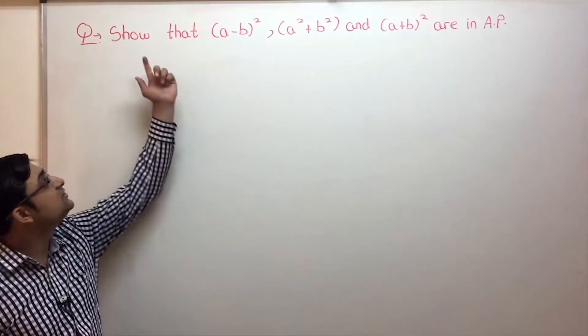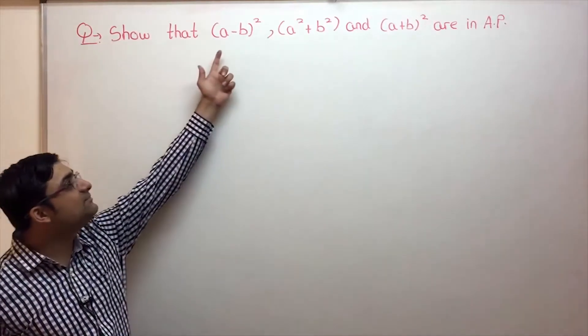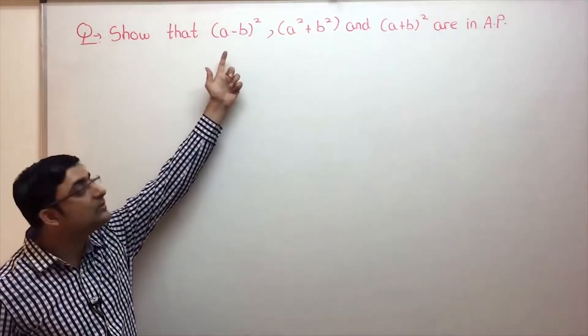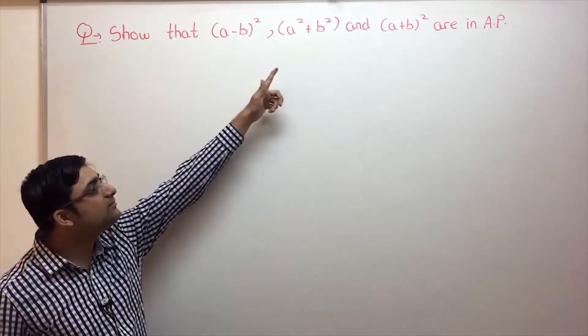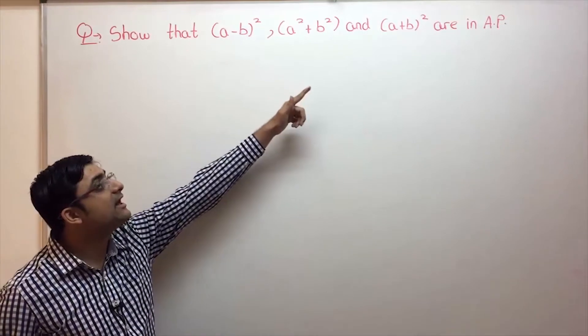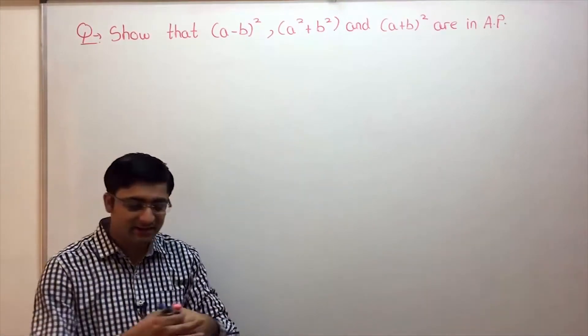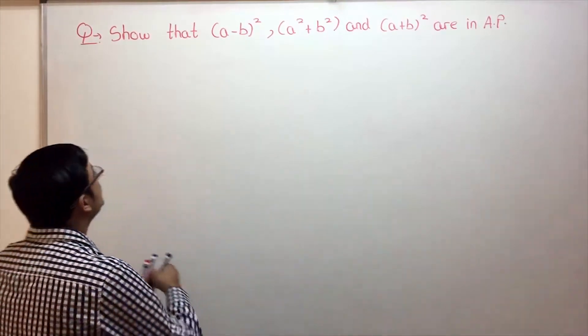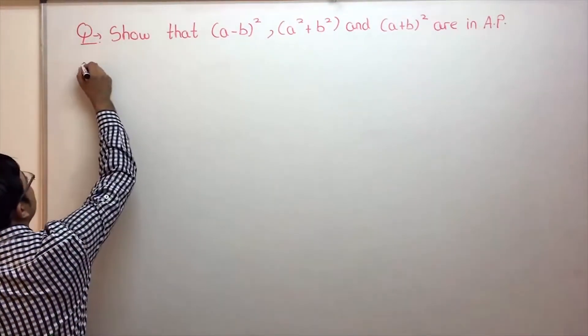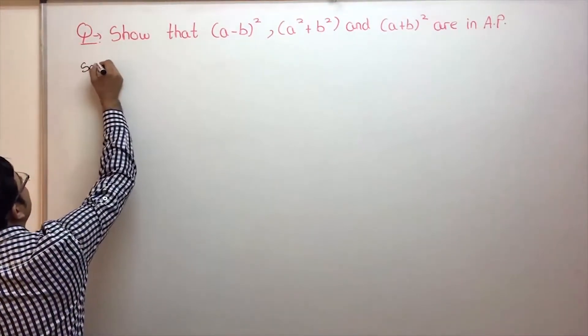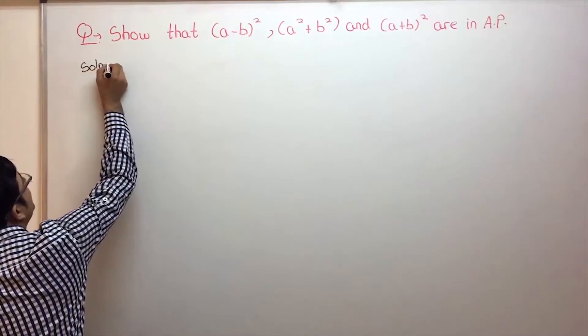Let's read the question: show that (a - b)², (a² + b²), and (a + b)² are in AP. So let's begin. Basically we have three terms over here.